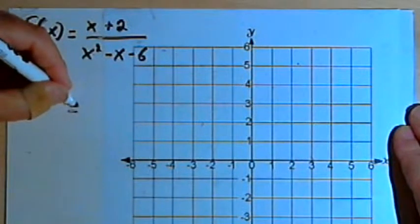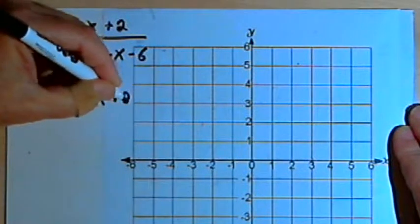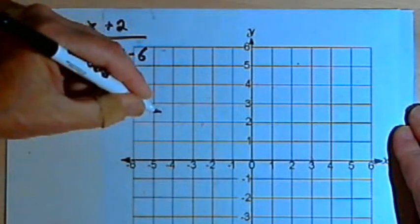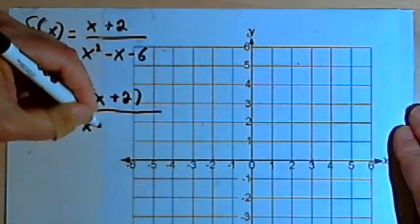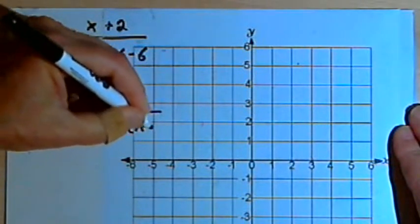So we're going to have x plus 2 over x minus 3 times x plus 2.